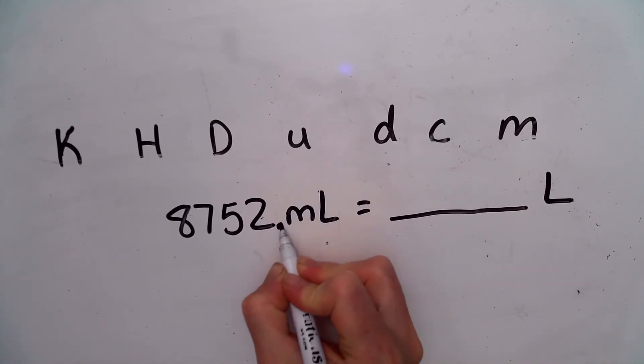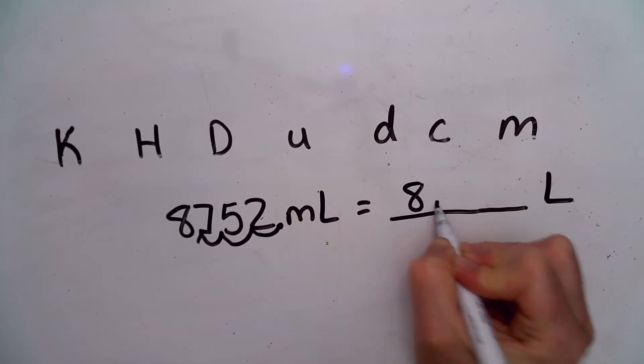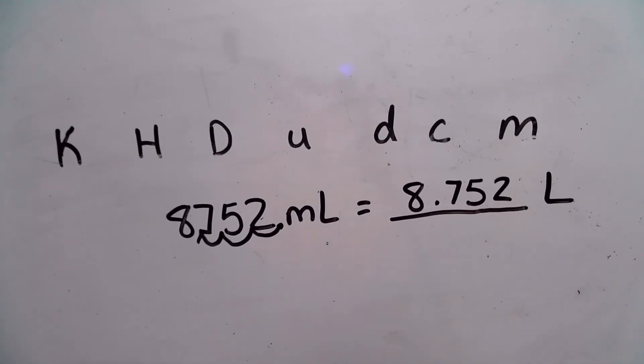So that means my decimal started here. I'm going to move it three times. One, two, three, and so my decimal is going to now go in this spot. Eight point seven five two liters.